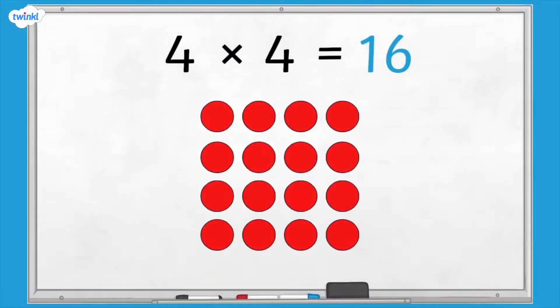If we use counters to make an array showing 4 rows of 4, we can see why it's called a square number.